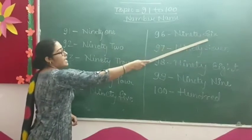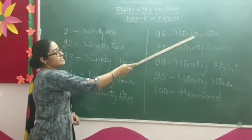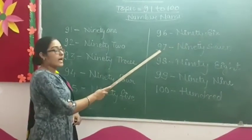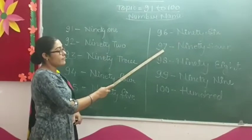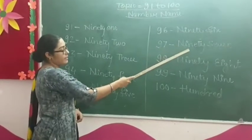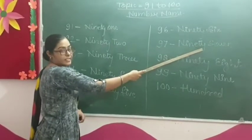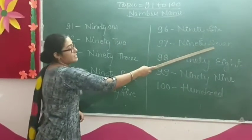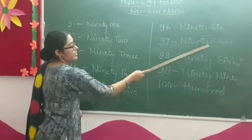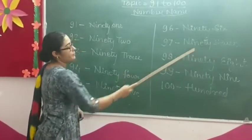Ninety-seven. N-I-N-E-T-Y — 90 — S-E-V-E-N — 7. Ninety-seven.